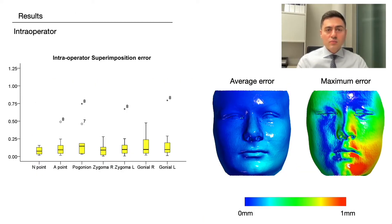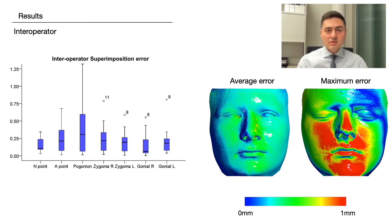In regard to the superimposition error, the results showed very good reproducibility when performed twice by each operator, with error averaging below 0.5 mm and maximum error approaching 1 mm in very few cases. The same was evident when we compared the results of two independent operators — average error did not exceed 0.5 mm, with few cases showing higher amounts of superimposition error.